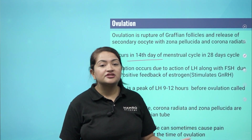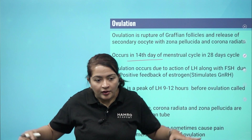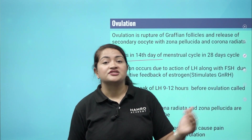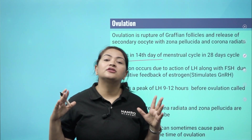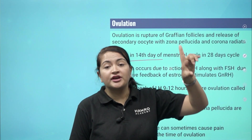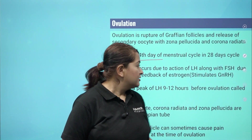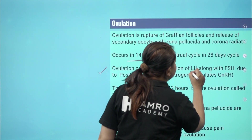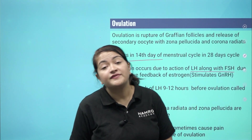During ovulation, follicle-stimulating hormone (FSH) rises, and luteinizing hormone (LH) is also secreted by the body. Prior to ovulation, the LH level is high. The peak level of LH is known as the LH surge. Ovulation occurs due to the action of LH along with FSH, driven by the positive feedback of estrogen.